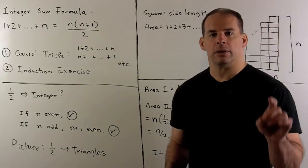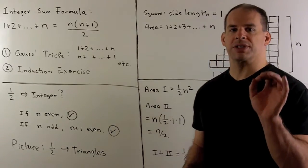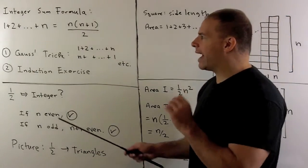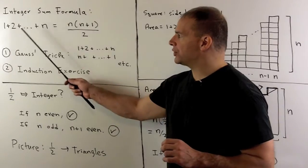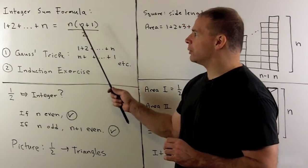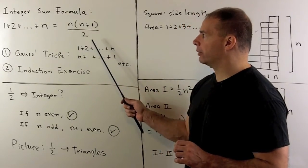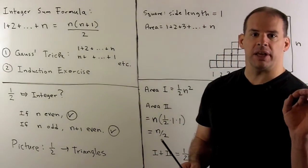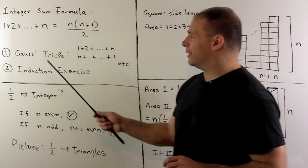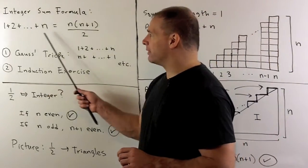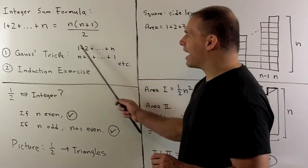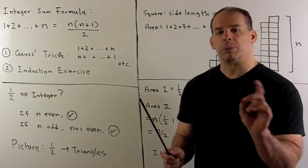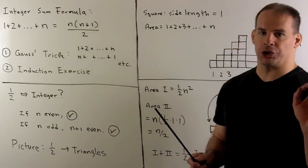Here's a quick one: the formula for the sum of first n positive integers. So we have 1 plus 2 all the way up through n, which equals n times n plus 1 over 2. First time you see this, it looks a little odd. On this side we have a sum of integers; on this side we have a fraction. We'll briefly explain that and then put a picture to it.